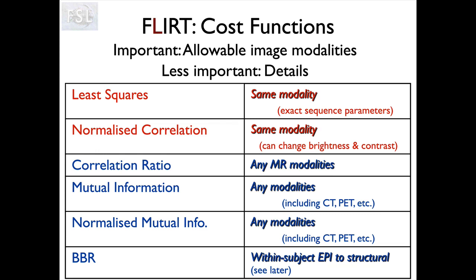If you have two different modalities you need to use any of the four below in blue. The default is correlation ratio, which can cope with any two different MRI modalities. Mutual information can cope with two different MRI modalities but also with MRI and other things like CT or PET, where images are much more different and show different aspects of tissue - for instance, CT shows bone very strongly whereas MRI cannot distinguish bone from air. Mutual information is the most flexible. BBR at the very bottom is a tailored cost function designed for EPI-to-structural registration, particularly incorporating distortion correction.